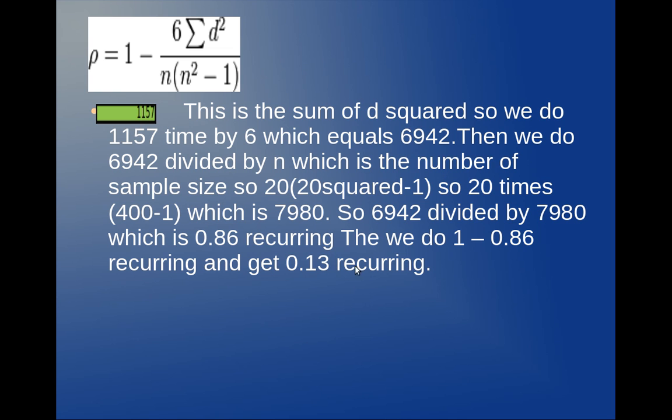So I have to do 6,942 divided by 7,980, which gets me 0.86 recurring. Now the common mistake here is to think this is Spearman's rank. But there is one more step: one take away that number. So now I have to do one take away 0.86 recurring, to get me 0.13 recurring. And that would be Spearman's rank, not 0.86.